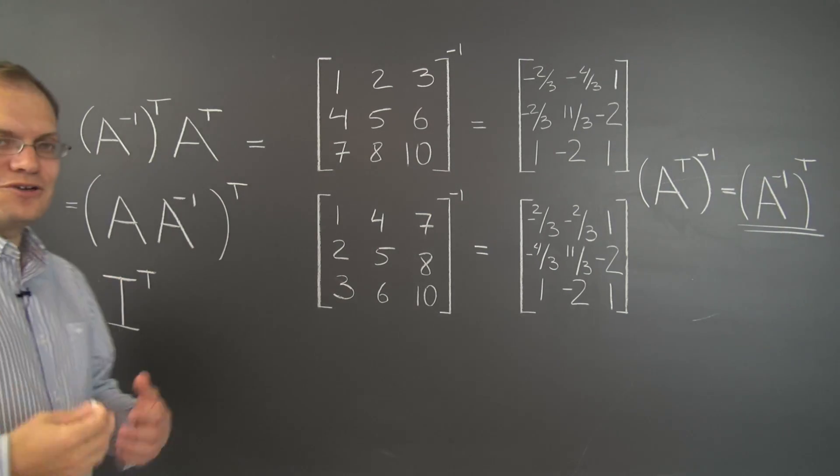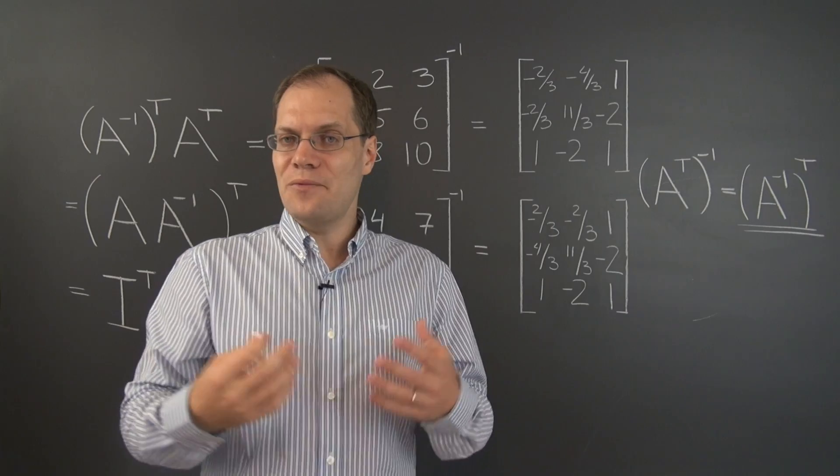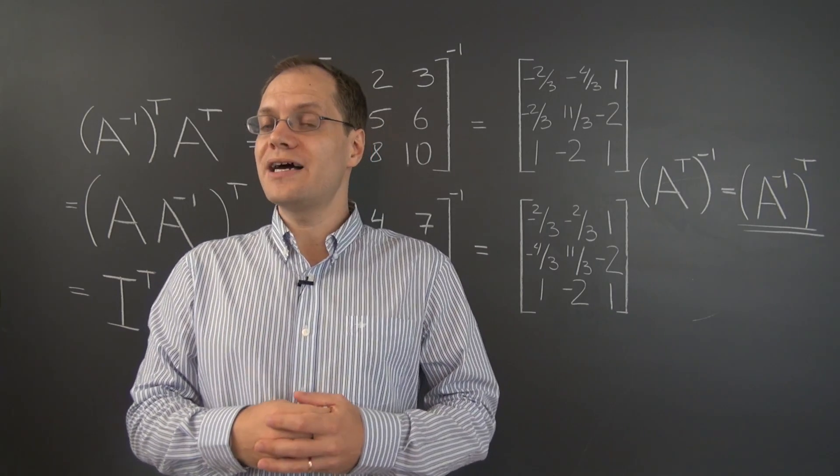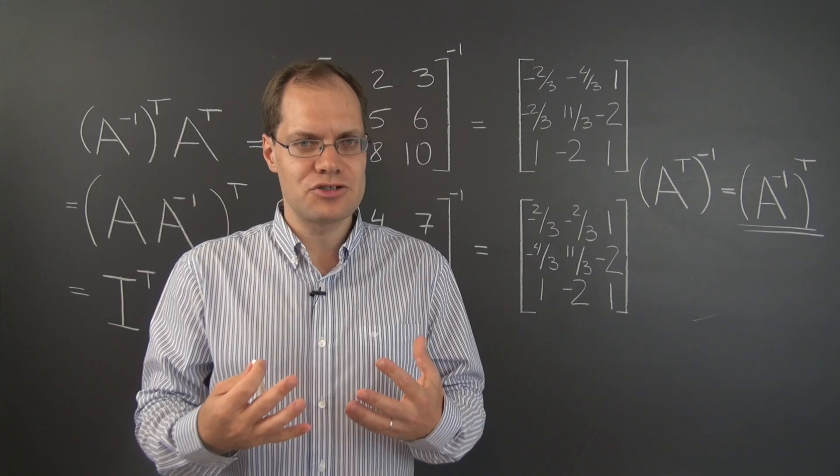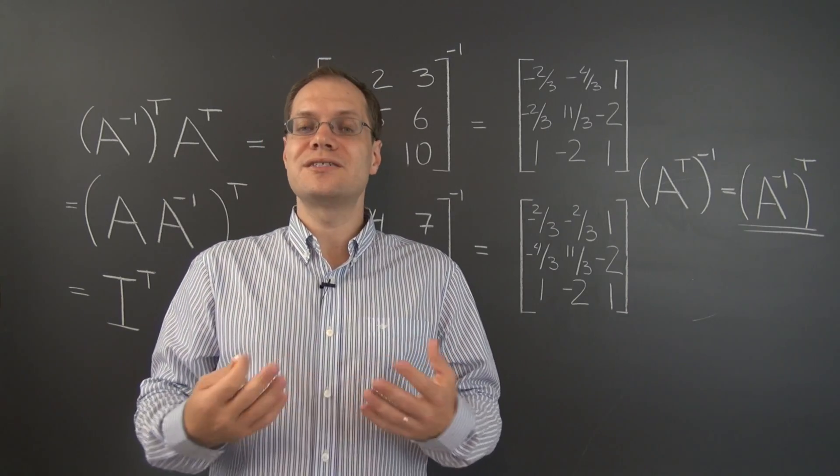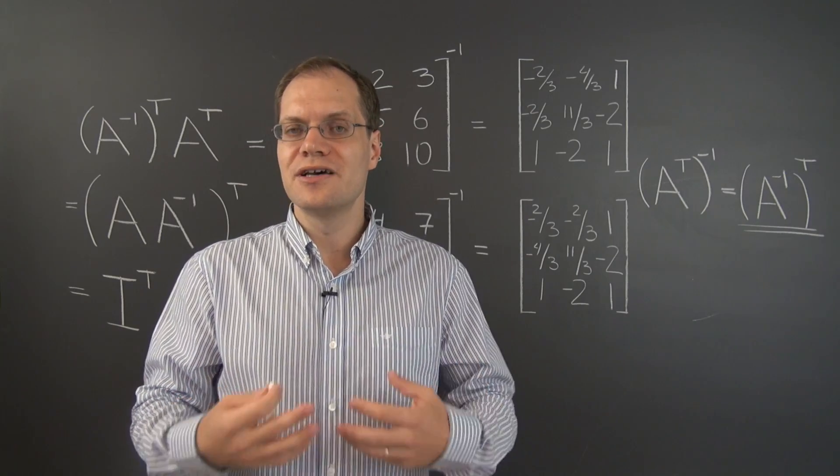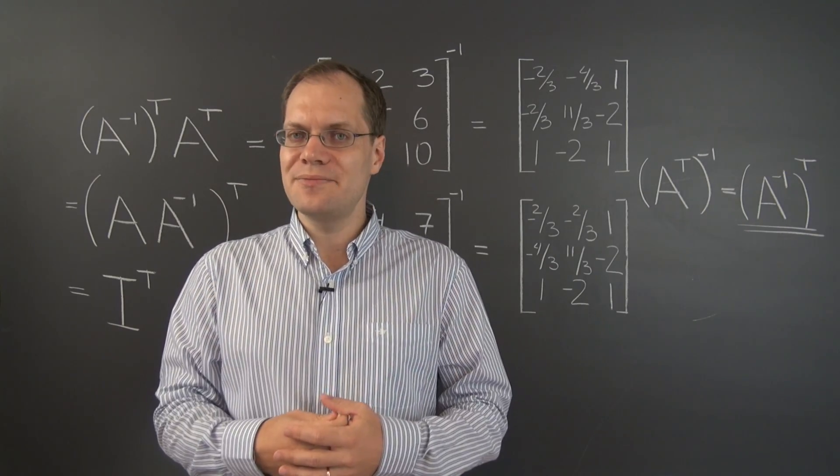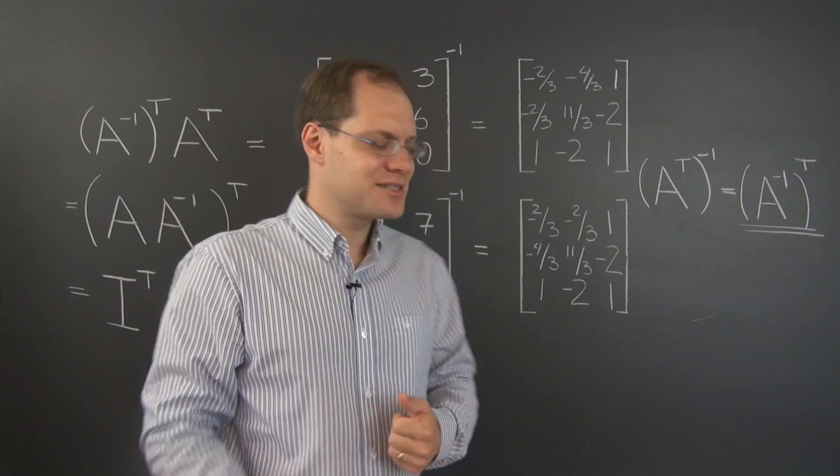And you don't have to think about it for a long time. What's the transpose of the identity matrix? What happens to the identity matrix when you turn its columns into its rows? Well its columns are exactly the same as its rows. So the transpose of the identity matrix is the identity matrix itself.